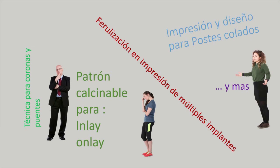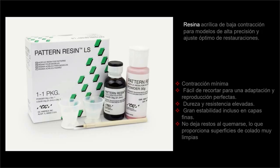Cuando hablamos de un material como Pattern Resin LS, nos preguntamos ¿para qué sirve? Podemos leer las instrucciones: hablan de impresión para postes colados, ferulización para implantes, patrones calcinables. Puedo diseñar en la clínica coronas y puentes para ahorrar tiempo y buscar el ajuste que a veces en nuestra comunicación con el laboratorio no se puede dar. Hay materiales como este que me ayudan a facilitar el día a día.